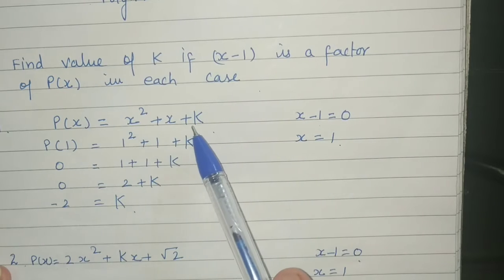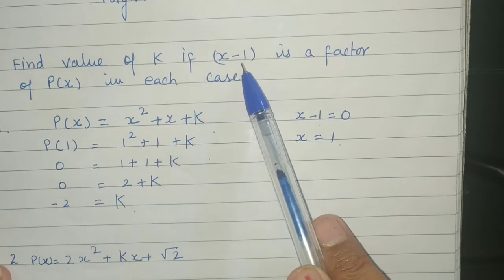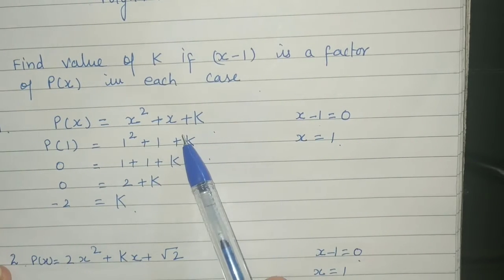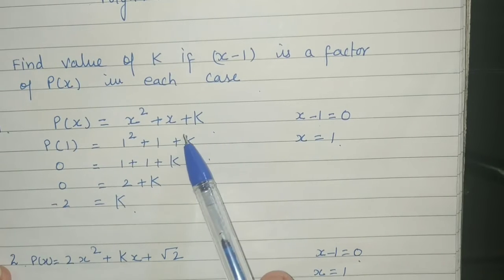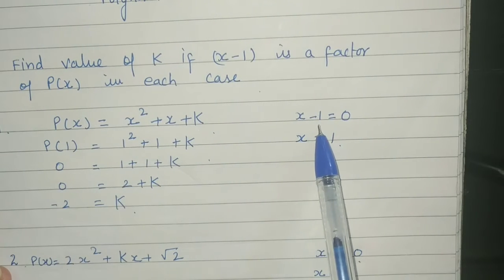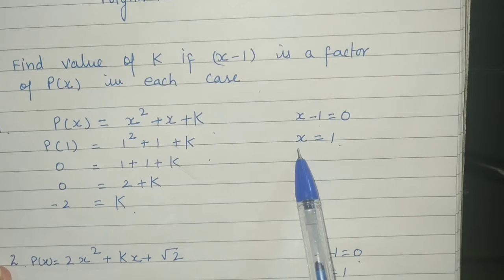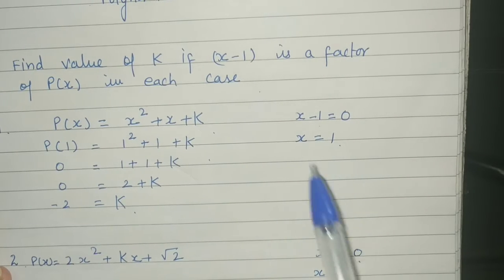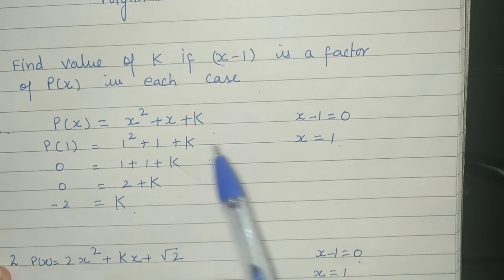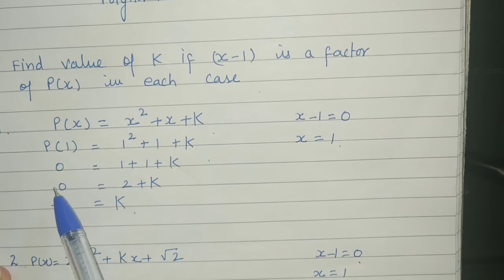If x minus 1 is a factor of this polynomial, then by using this factor, polynomial must be equal to 0. So x minus 1 equals 0, so value of x is equal to 1. By putting the value of x in this polynomial, polynomial must be equal to 0.